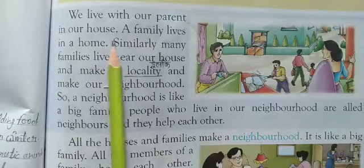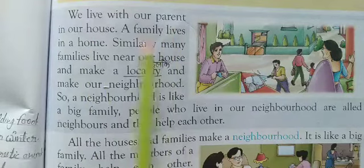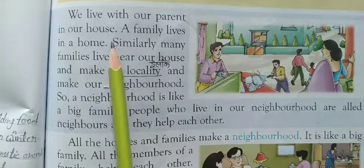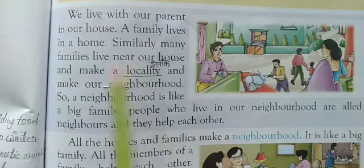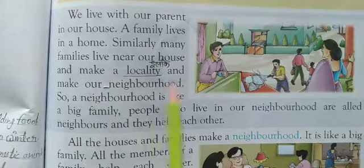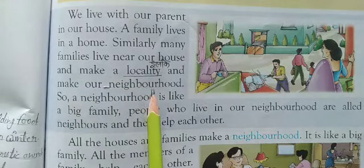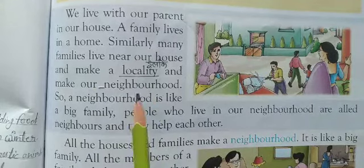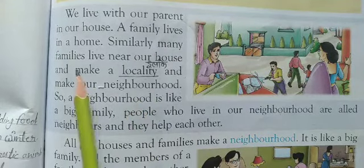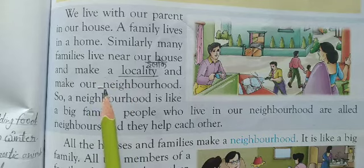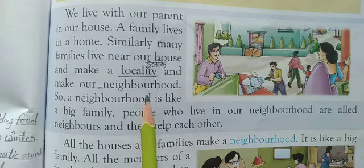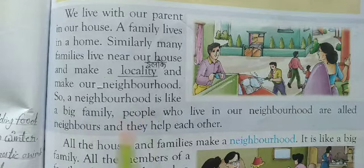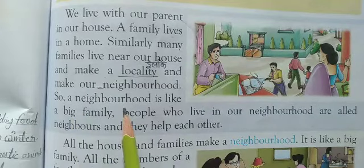We live with our parents in our house. हम अपने माता-पिता के साथ अपने घर में रहते हैं. A family lives in a home — एक परिवार घर में रहता है. Similarly, many families live near our house and make a locality, making our neighborhood. कई परिवार हमारे घर के आसपास रहते हैं जो एक इलाका बनाते हैं, हमारा पड़ोस बनाते हैं. So, a neighborhood is like a big family.